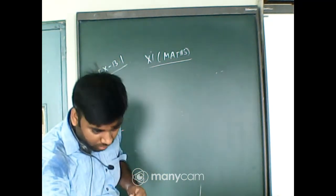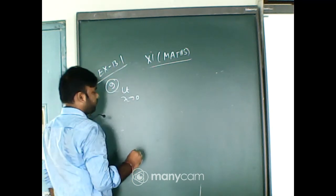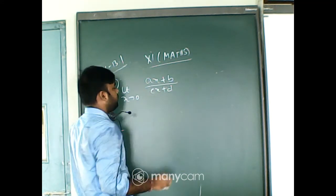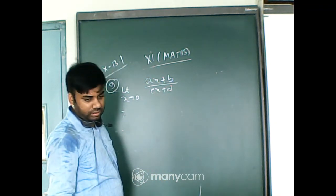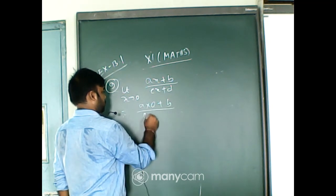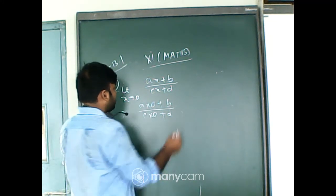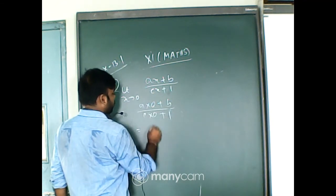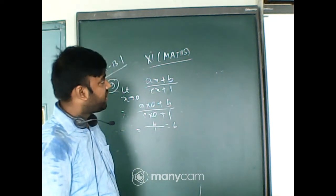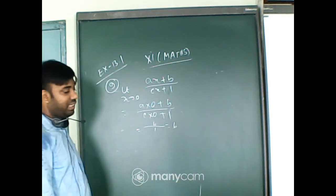Question number nine: limit x tends to 0 of (cx + 1). You can put x equal to 0 directly. By putting x equal to 0: c times 0 plus 1 equals 1, so b times 1 equals b. The answer to question nine is b.